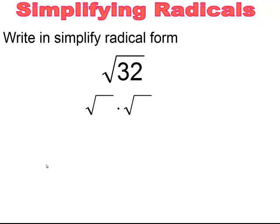For the square root of 32, the highest perfect square factor is 16 and the leftover is 2. Simplify the square root of 16 and you get 4 radical 2. Once it's simplified, you're done.